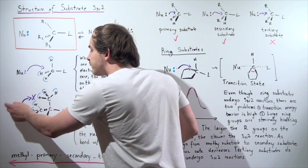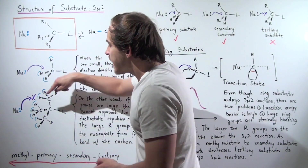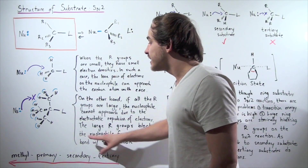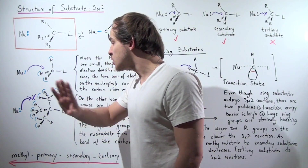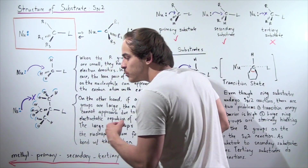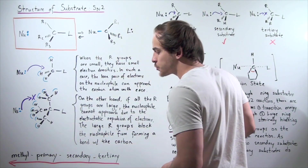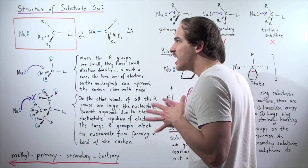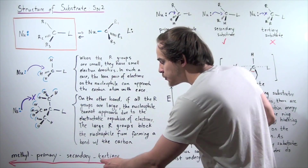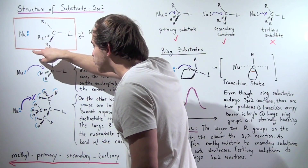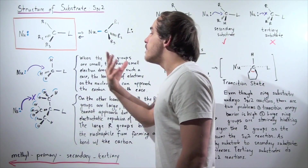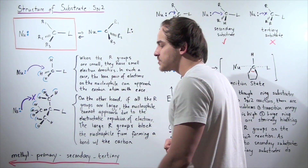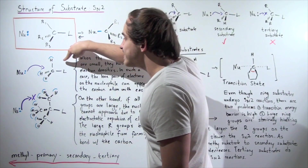If these groups are large, this nucleophile will have to take its time — it will have to find a little hole to get into the carbon. In fact, tertiary compounds will not react via SN2 reaction. As we go from methyl substrate to primary substrate to secondary substrate to tertiary substrate, our reaction rate decreases because our R groups increase. Tertiary means all our R groups are carbon-containing methyl groups. Secondary means we have at least one H atom. Primary means we have two H atoms. And methyl means we have three H atoms.